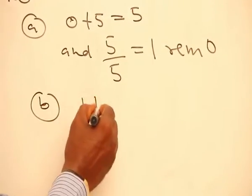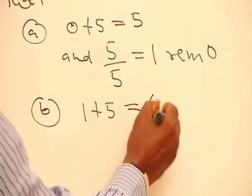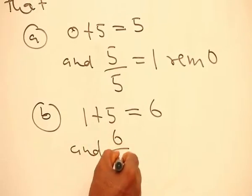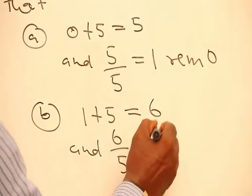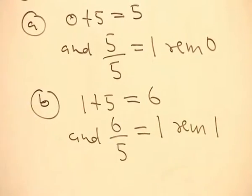B, 1 plus 5 is equal to 6. And 6 divided by 5 is equal to 1, meaning a remainder 1.